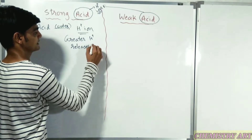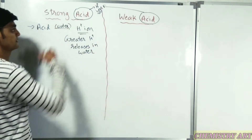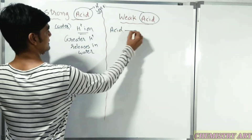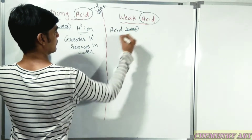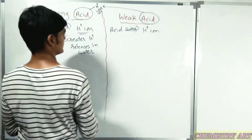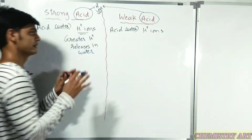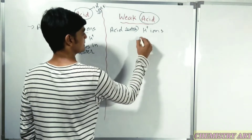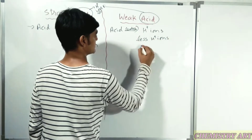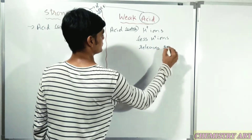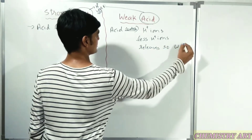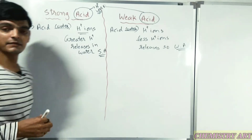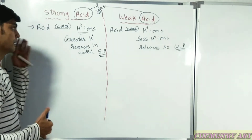So in a strong acid, greater H+ ions are released in water - that is known as a strong acid. And in a weak acid, when acid is added into the water, H+ ions will be released, but less H+ ions are released - so it is known as a weak acid. This is the very basic definition, but you have to understand it.